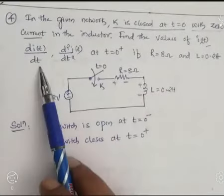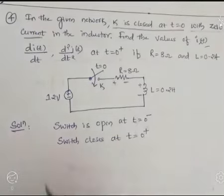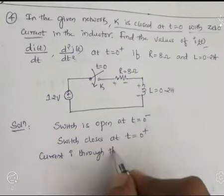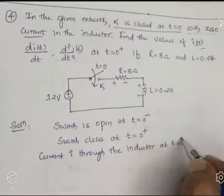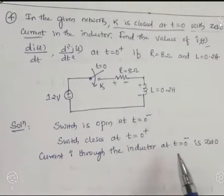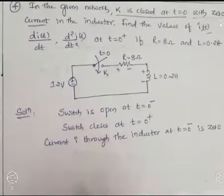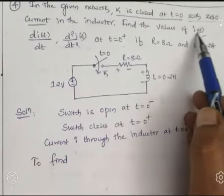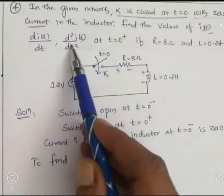We need to find I(0+), the one-time differentiation of current dI/dt at t equal to 0 plus, and the second-order differentiation d²I/dt² at t equal to 0 plus. The current through the inductor at t equal to 0 minus is 0, because the current through an inductor cannot change instantaneously — at the initial condition it is 0. These three values we have to calculate.